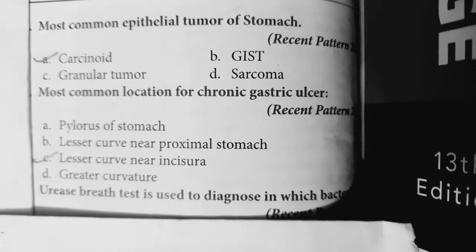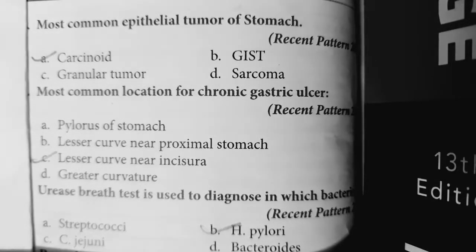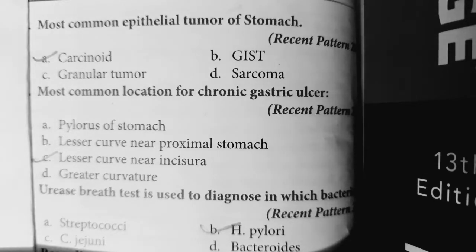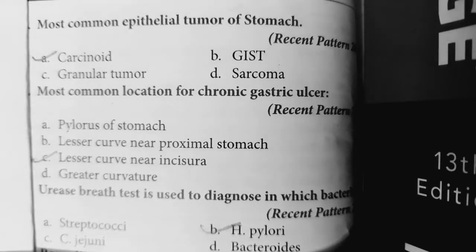Question 3: Urease breath test is used to diagnose which bacteria? It is used to diagnose H. pylori. The best non-invasive investigation to diagnose the presence of H. pylori is ELISA. The best investigation to diagnose eradication is C13/C14 urease breath test. The best invasive investigation to diagnose is rapid urease test. The stain used for H. pylori is Giemsa/Warthin-Starry stain. These are the different MCQs asked for this topic.